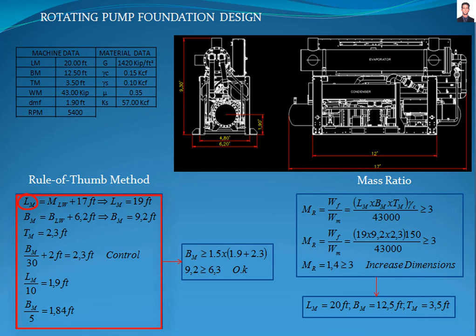Nlw is the distance to provide enough area for maintenance, assumed as 1 foot per side. Vm is the width of the foundation. Vlw is the distance to provide enough area for maintenance, assumed as 1.5 feet per side. Tm is the height of the foundation, and to be assumed as a rigid foundation, the thickness of the foundation should be the greater of these equations, which is 2.3 feet.